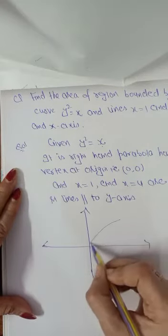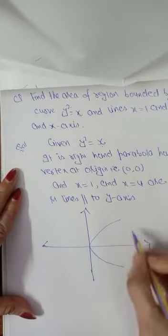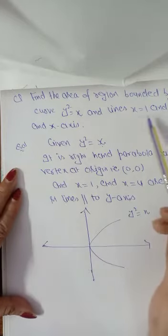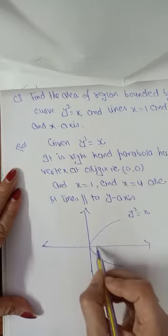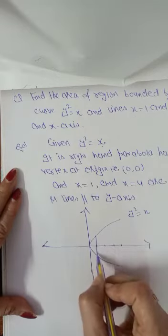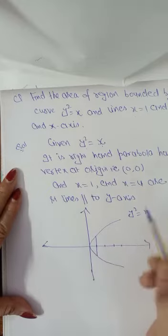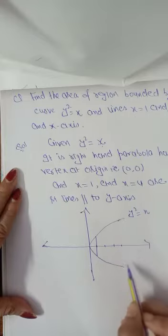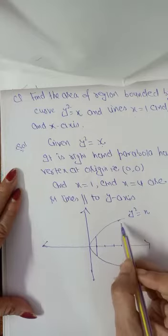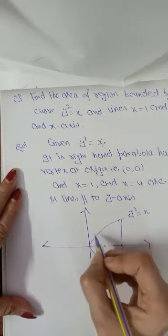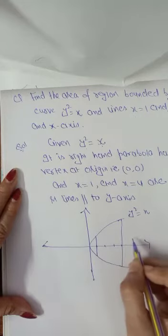Right hand parabola y square equals to x. Next we have x equals to 1, so it has x equals to 1. Next we have x equals to 4, 1, 2, 3, 4. Your x equals to 1 and your x equals to 4.